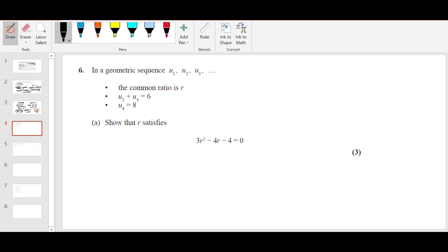Question number 6 now. In a geometric sequence u1, u2, u3, the common ratio is R. U2 plus u3 equals 6, and u4 is 8. So R satisfies this equation. Let's take the first term as A. So u2 can be written as AR, u3 can be written as AR squared. So from here, AR plus AR squared equals 6.